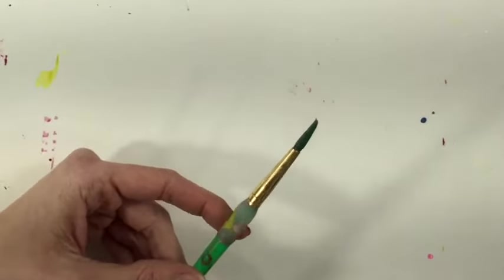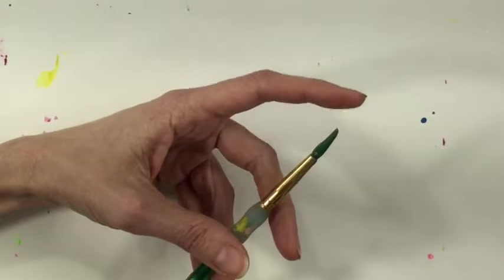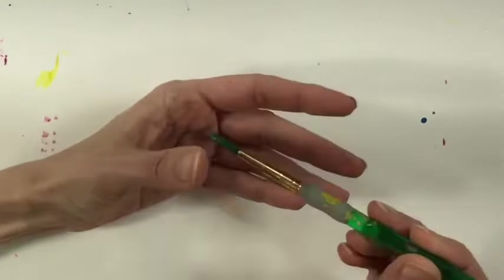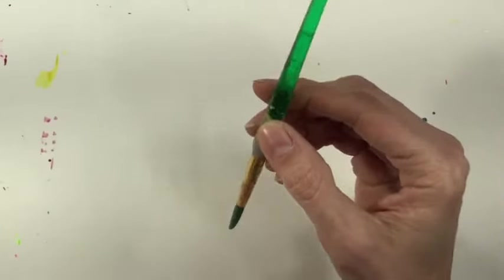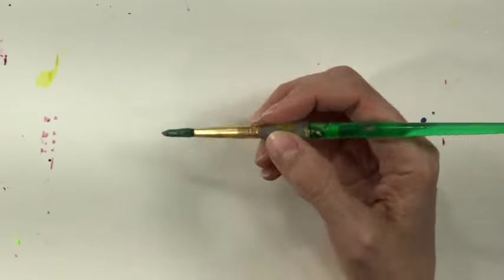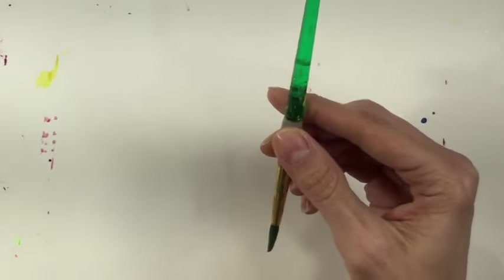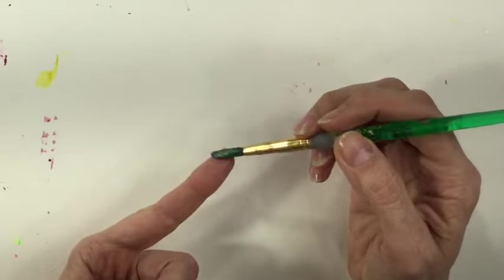Your paintbrush is like a ballerina. She's got nice pointy toes and when you're painting, you'll want to make sure that that paintbrush ballerina is always on her toes. When you're using your paintbrush, don't hold it like you would a pencil. Instead, hold it straight up and down like a vertical line. Your paintbrush ballerina should always be on her tippy toes.